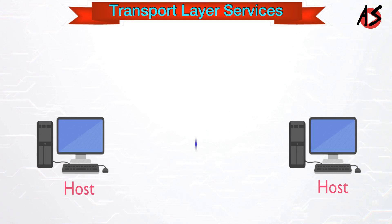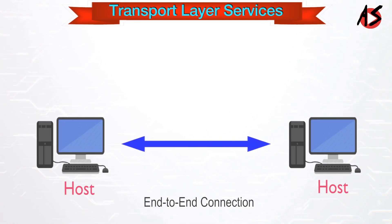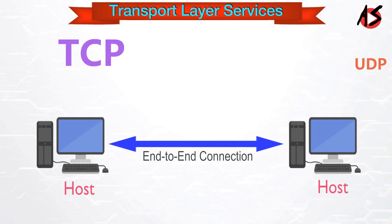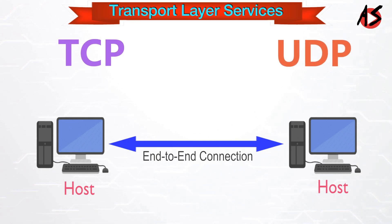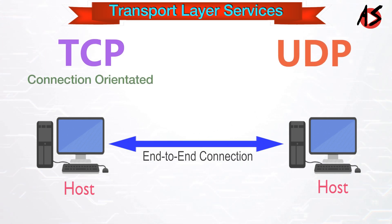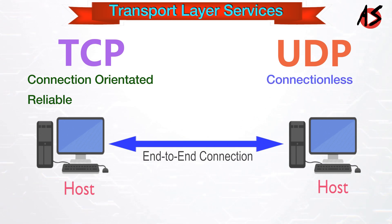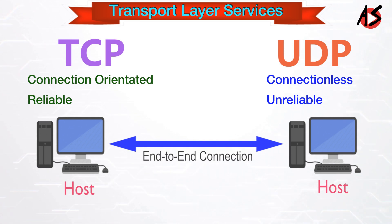The transport layer is also responsible for creating the end-to-end connection between hosts, for which it mainly uses TCP and UDP. TCP is a secure, connection-oriented, and reliable protocol. On the other hand, UDP is a connectionless and unreliable protocol which ensures best-effort delivery.